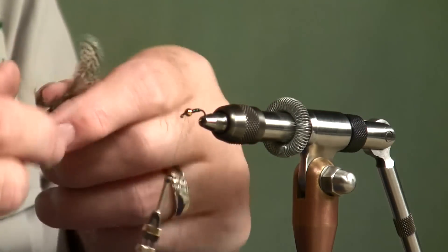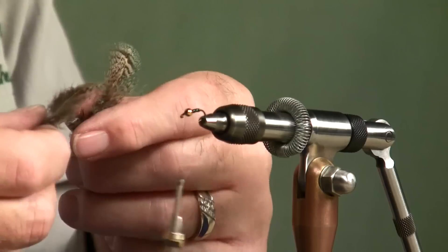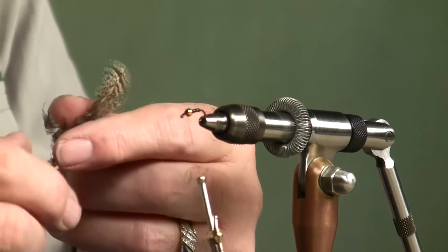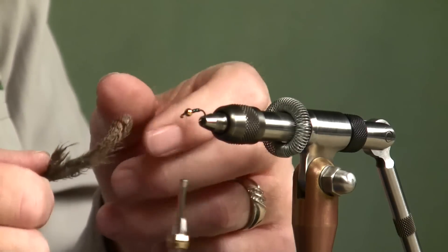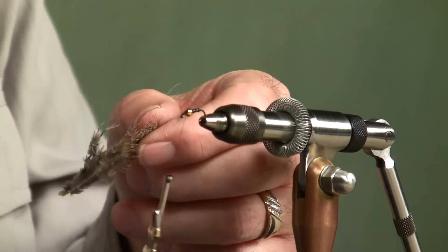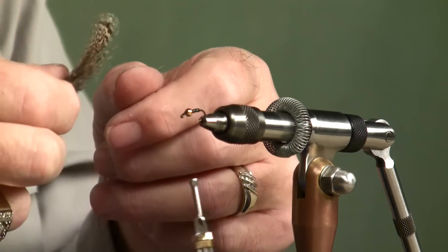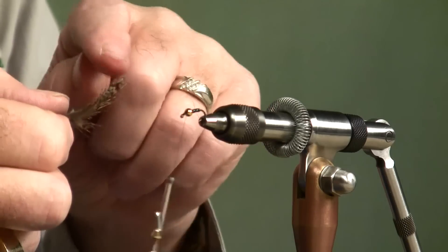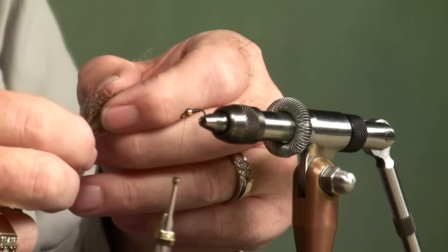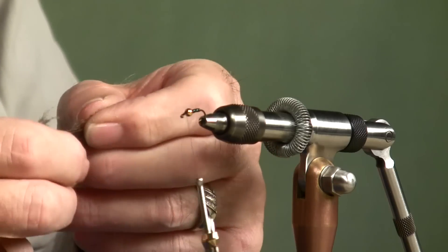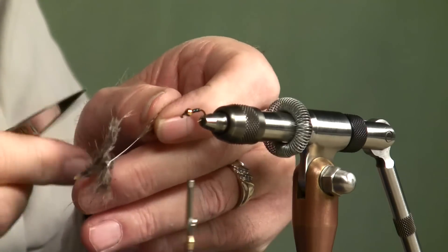And I'm going to take a Hungarian partridge feather. Just a brown, you could use brown hen hackle if you wanted. Just something soft that's going to move in the water. I have taken the feather now. I have it upside down, or the dull side up. First thing I'm going to do is get rid of all of that fuzz. You don't need it.